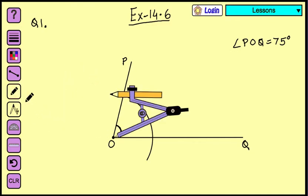Can you see? It's cutting here and it is cutting here. Wherever the arc is cutting these two lines, these are the two points from where we are going to draw the bisector.